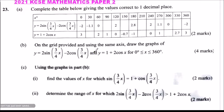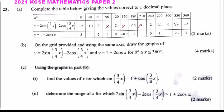Question number 23, Part A: complete the table below giving the values correct to one decimal place. You are given the values of x from 0 to 360 degrees. The first trig function is y = 2sin(¾x) - 2cos(¾x), with some values missing. The other function is y = 1 + 2cos(x), and you are supposed to fill in the missing values.